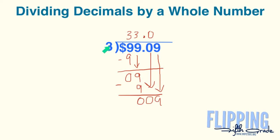Finally, we drop our last number, which is a 9, and ask ourselves how many times does 3 go into 9? Again, that answer is 3. Final step: 3 times 3 equals 9. Put it down here and we get a remainder of 0. Don't forget your dollar sign up top. Our answer is $33.03.